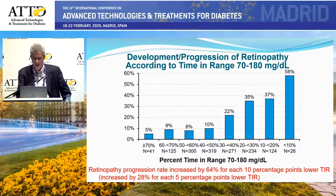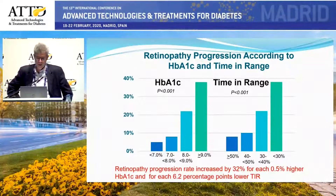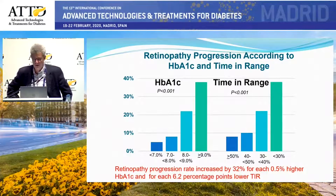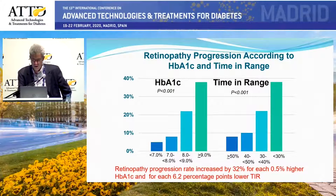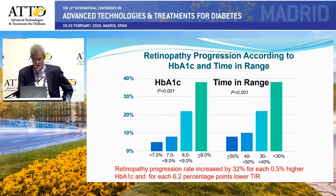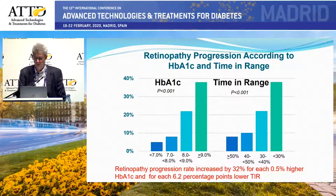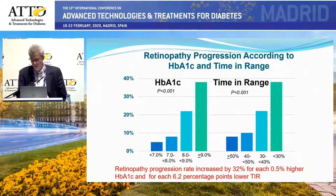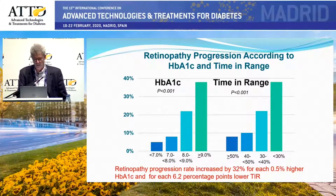Comparing with hemoglobin A1C, the patterns look remarkably similar. We calculated that a 0.5% difference in hemoglobin A1C equated to a 32% increase in retinopathy progression, and that corresponded to a 6.2 percentage point lower time in range. So a lower time in range by 6.2% essentially equated with a 0.5% higher A1C with respect to the increase in retinopathy progression.